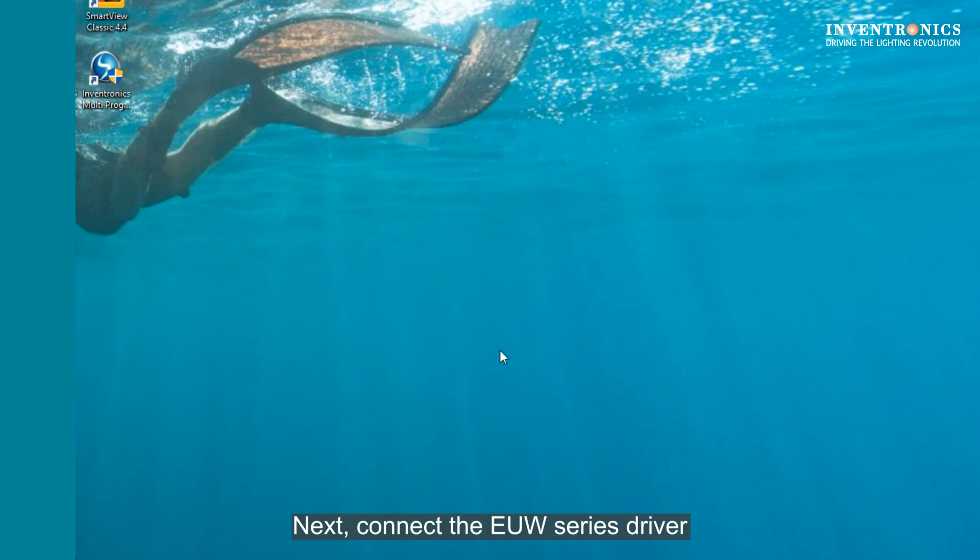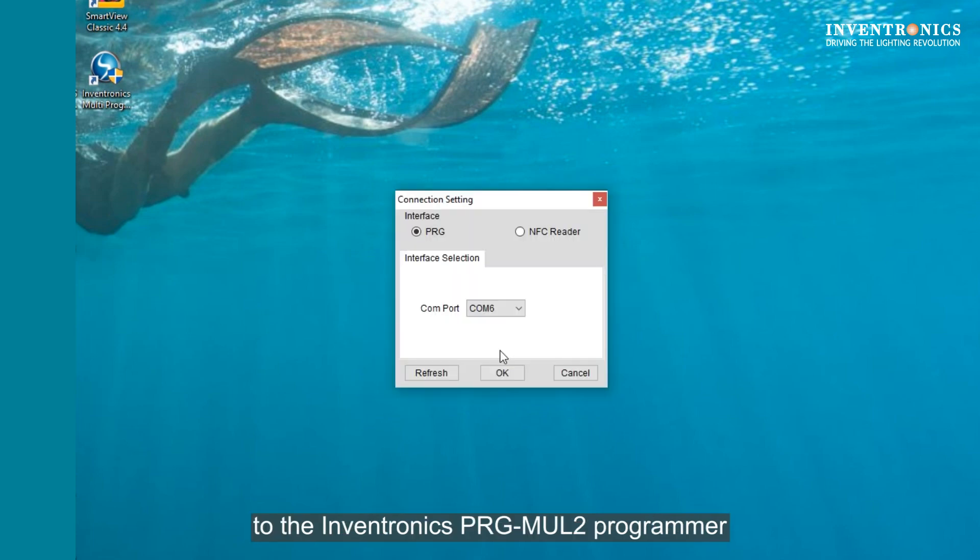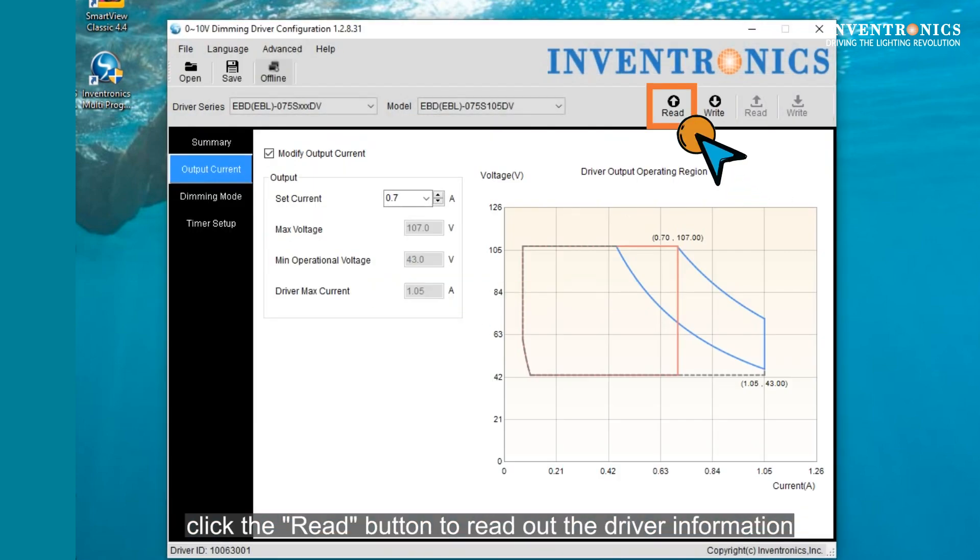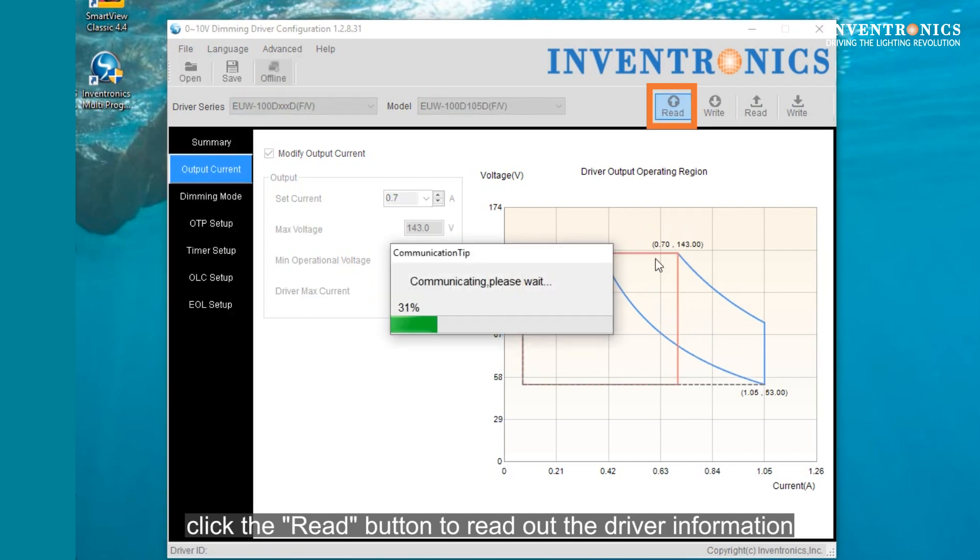Next, connect the EUW series driver to the Inventronics PRG-MUL2 programmer. After completing the connections to the Inventronics programmer, click the Read button in our software to read out the driver information.